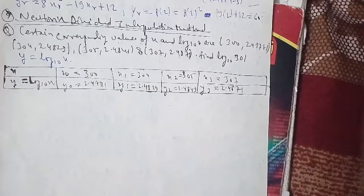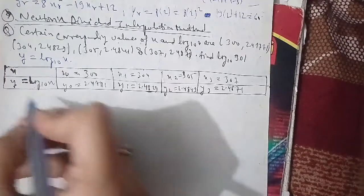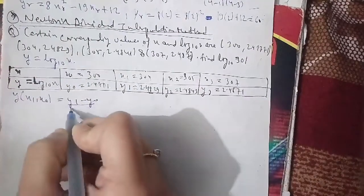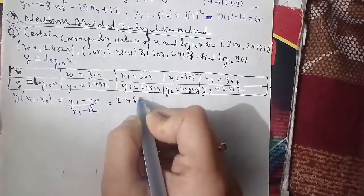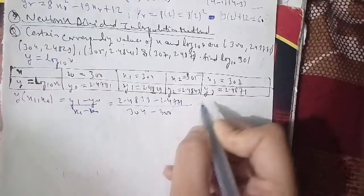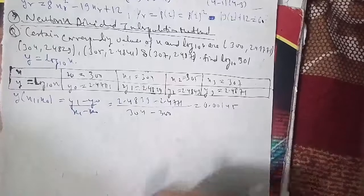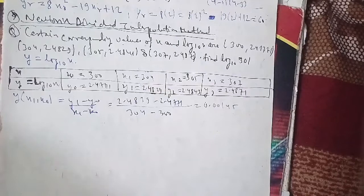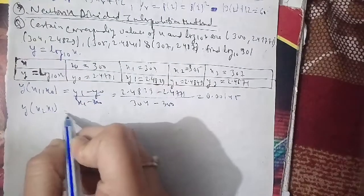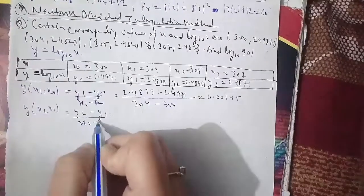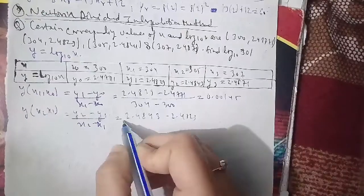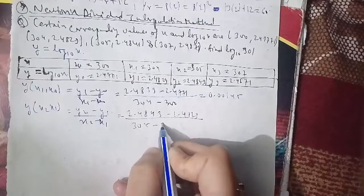Next: y[x2,x1] = (y2-y1)/(x2-x1) = (2.4843-2.4829)/(305-304) = 0.0014. Then y[x3,x2] = (y3-y2)/(x3-x2) = (2.4871-2.4843)/(307-305) = 0.0014.